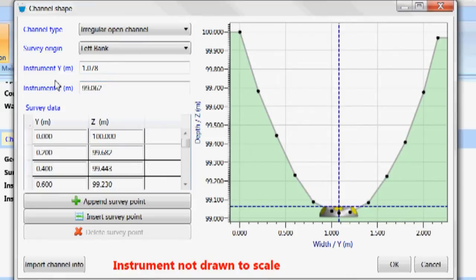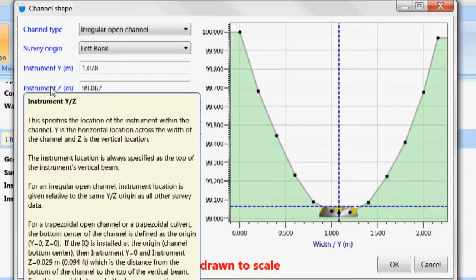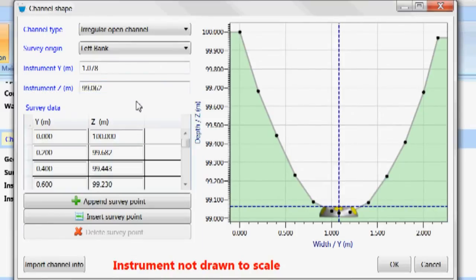The location of... One thing it's important for us to actually tell the instrument where it is within the cross section. In this case, we installed the instrument and then we performed a channel survey where we measured the actual cross sectional area of the channel. We actually measured the instrument's location in that channel in terms of its position, its width across the channel, and its actual elevation in the channel. So we put the width here, which is Y, which corresponds to this value here, Y. And we put instrument Z, which is the height of the instrument relative to the channel cross section.